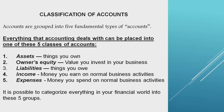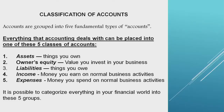Now we are going to look at the classification of accounts. There are five accounts. We have assets — things that belong to a business. Owner's equity — the value you invest in your business. Liabilities — things that you owe. Income — money you earn on a normal business activity. Expenses — money you spend on normal business activities.